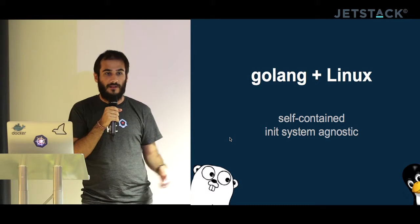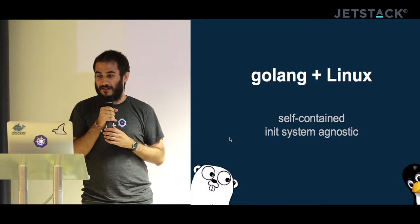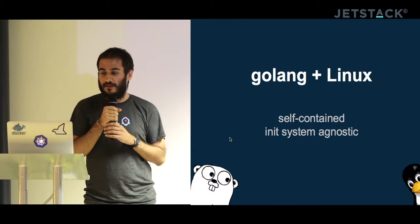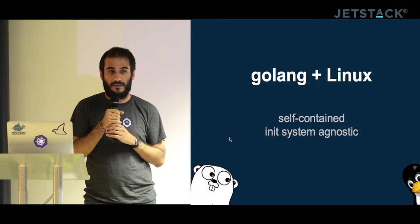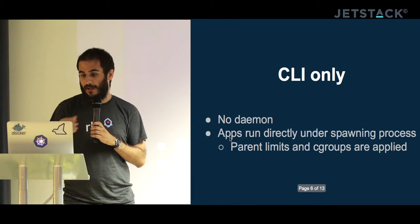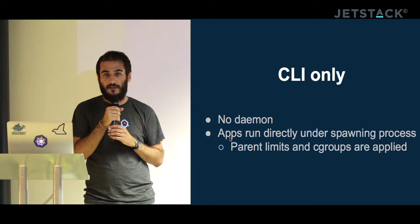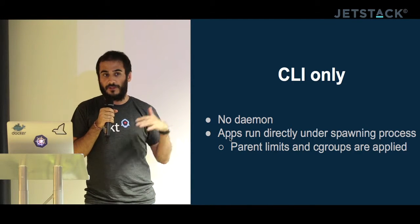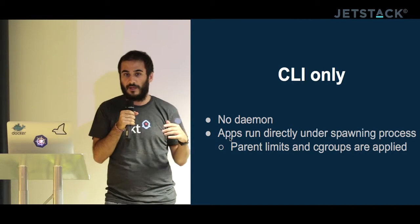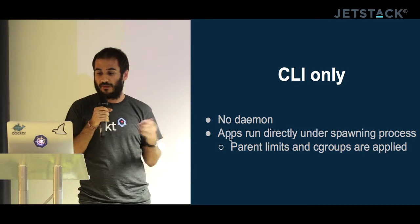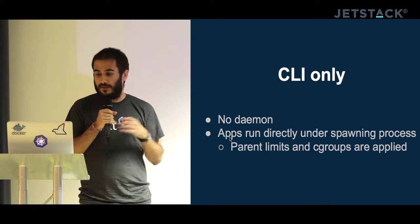Rocket is implemented in Golang, like almost everything in containers and cloud nowadays, and it runs on Linux. It is self-contained — just a binary — and init-system agnostic. It's CLI only, with no daemon like Docker. If Docker's daemon crashes, all the containers crash. With Rocket you don't have this problem because it's just normal processes, so apps run directly under the spawning process.